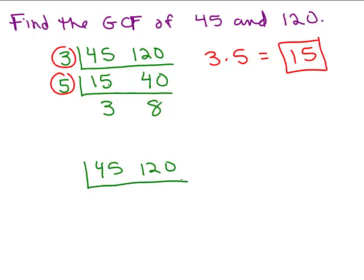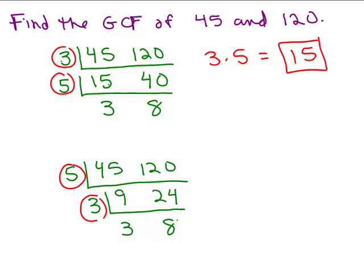Now, somebody else may have said they could tell right away that 5 goes into both of those numbers. That's fine — go ahead and divide by 5. 5 goes into 45 nine times, and 5 goes into 120 twenty-four times. Then we look at our two new numbers and think, what goes into both 9 and 24? Does 3 go into both? Yes. So we divide and we'll get 3. The numbers on the outside should be the same no matter how you do it — the order might be different, but 5 times 3 still gives us 15. We don't use the bottom numbers to write the greatest common factor.